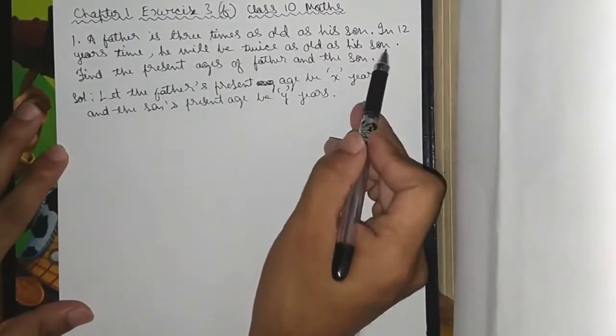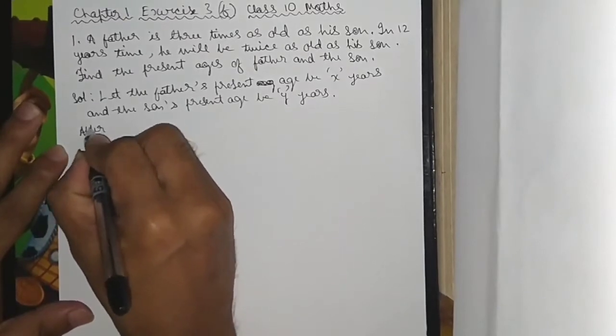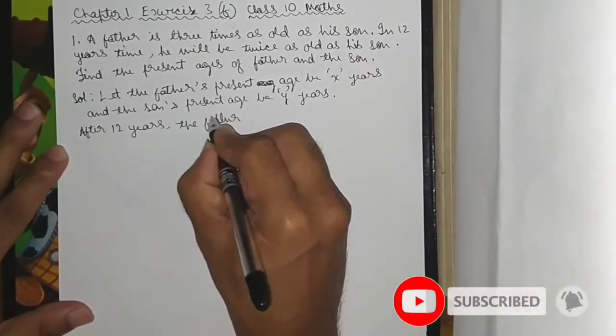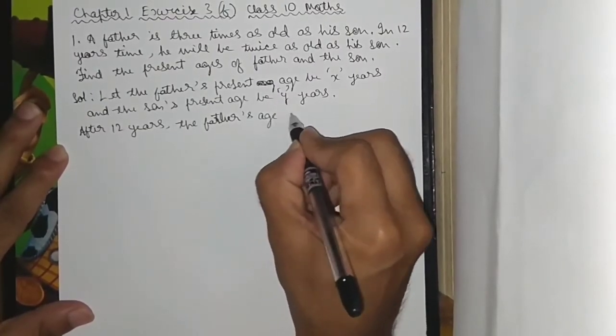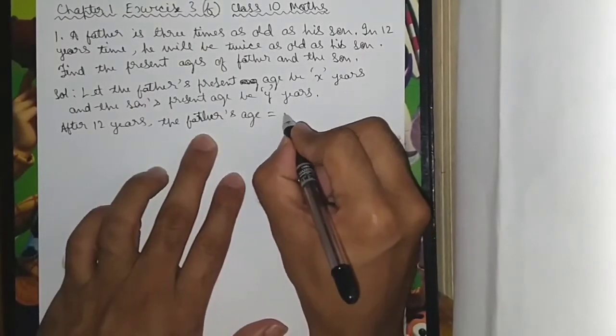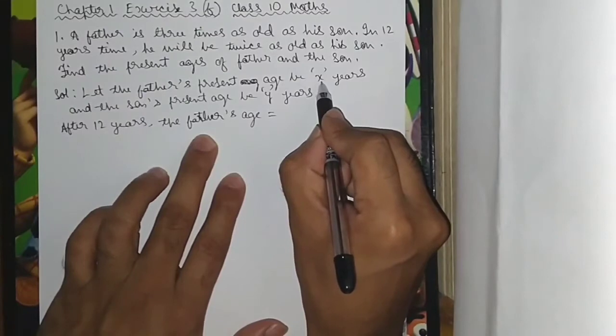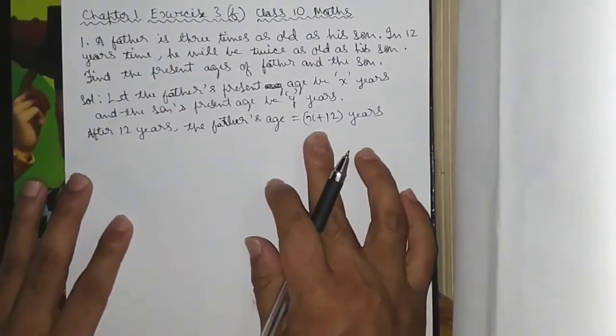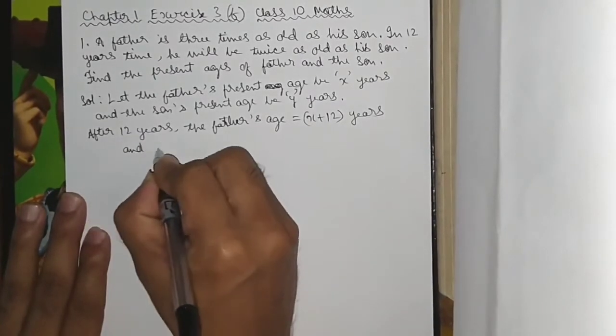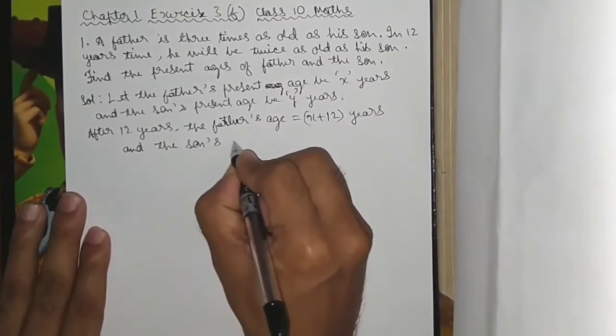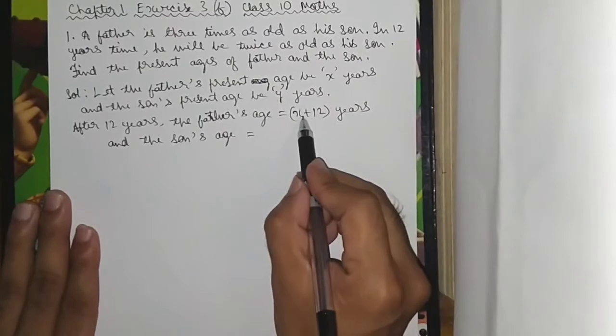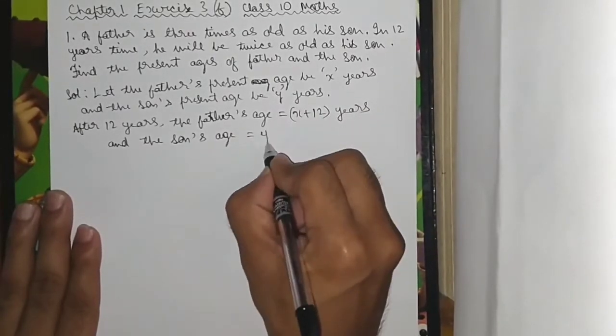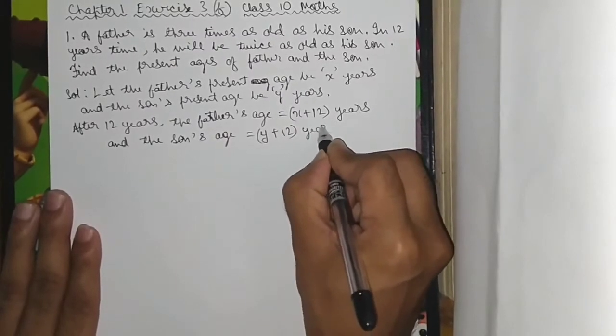After 12 years, the father's age will be x plus 12 years, and the son's age will be y plus 12 years.